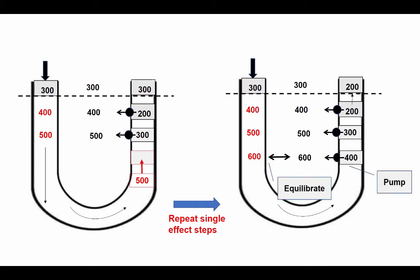The thick ascending limb is going to pump salts out of the limb into the interstitium, once again establishing a gradient of about 200 milliosmoles per kilogram. The next step involves equilibration of that hyperosmotic medullary interstitium with the descending limb.